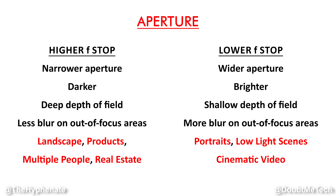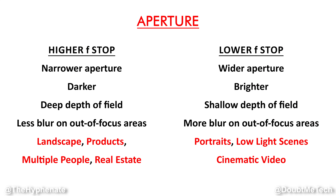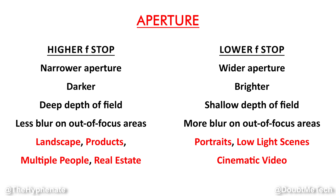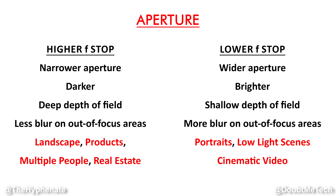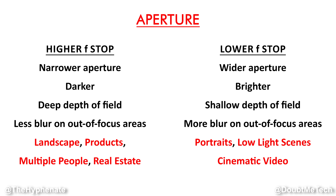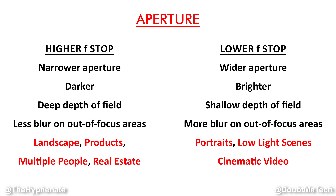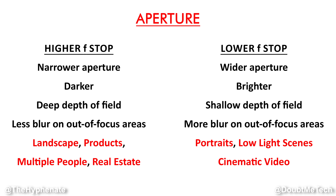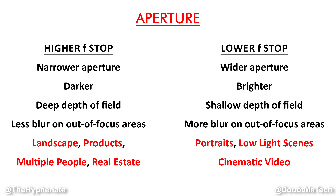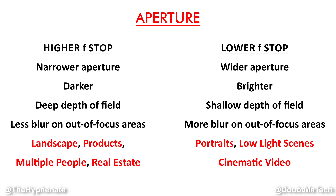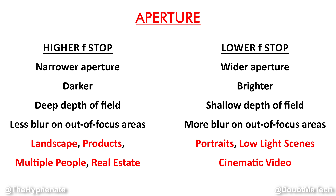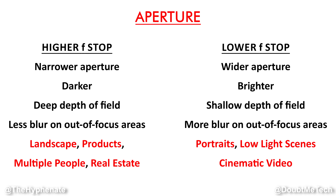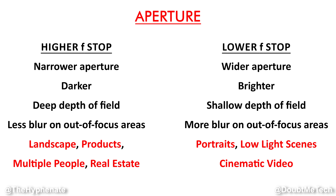The higher the f-stop, the more narrow the opening — a narrow aperture. You get less blur, more of the image in focus, and less light resulting in a darker image. A term a lot of people use is referring to a lens as "fast" — a fast lens tends to have a wider aperture such as f1.8, f1.4, f1.2, etc. Wider apertures are ideal for portraits, scenes with low light, and have a more cinematic look on video. Higher f-stops are great for landscapes, buildings, products, or if you have multiple people in a shot.